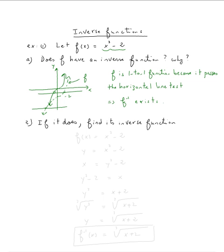Now for question two, they ask us if it does, find its inverse. Since we know it exists, we just need to find it. So how do we find it? First, let's write the function f of x equal x cubed minus two.